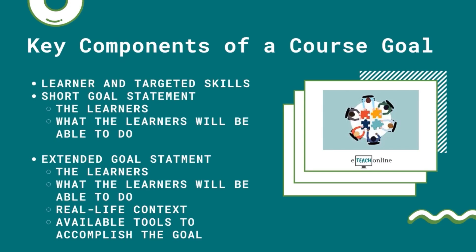A short goal statement should include a brief description of the learner and targeted skills. In contrast, a complete goal statement provides additional information about the performance context and the availability of tools. A short goal statement is a description of the learner and what learners will be able to do. An extended goal statement adds the real-life context in which the skills are to be applied and available tools for accomplishing the goals. Both statements are used to focus subsequent analyses. A complete goal statement may be used as a course description and for marketing purposes.